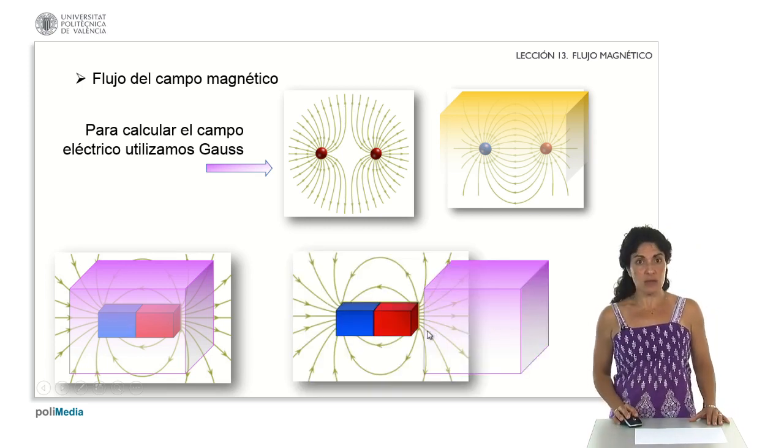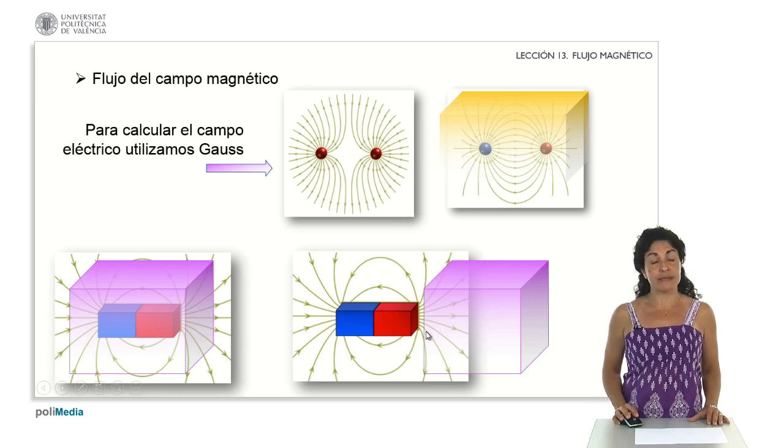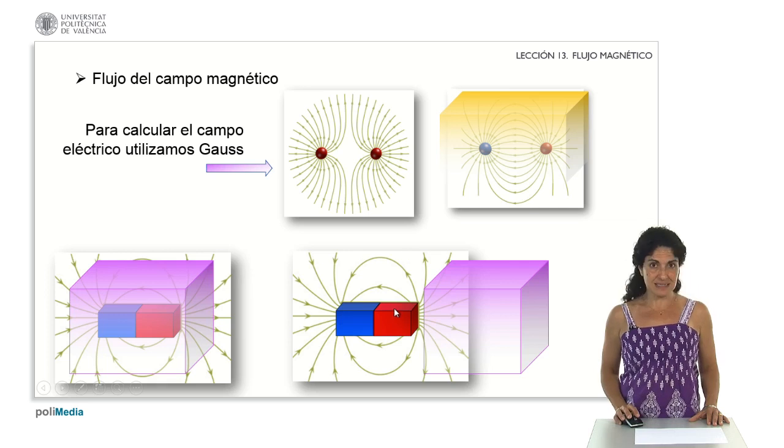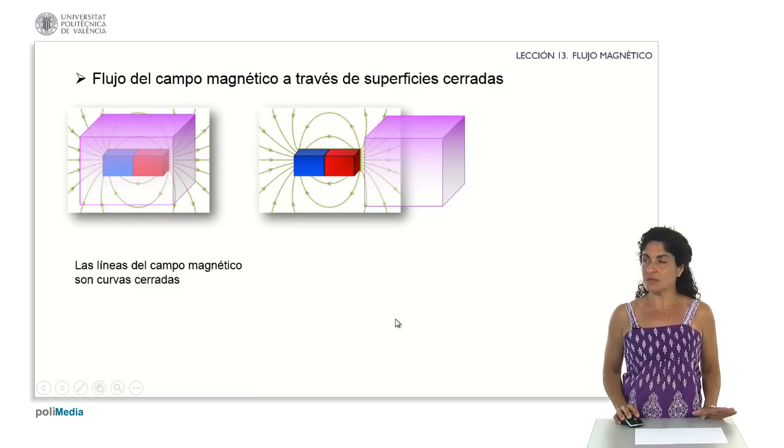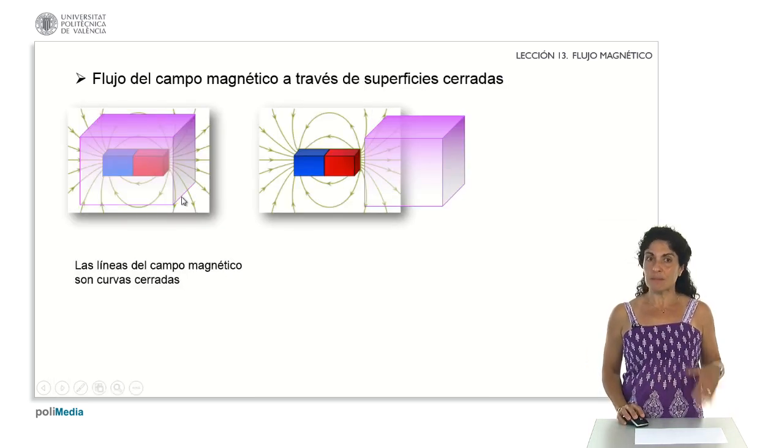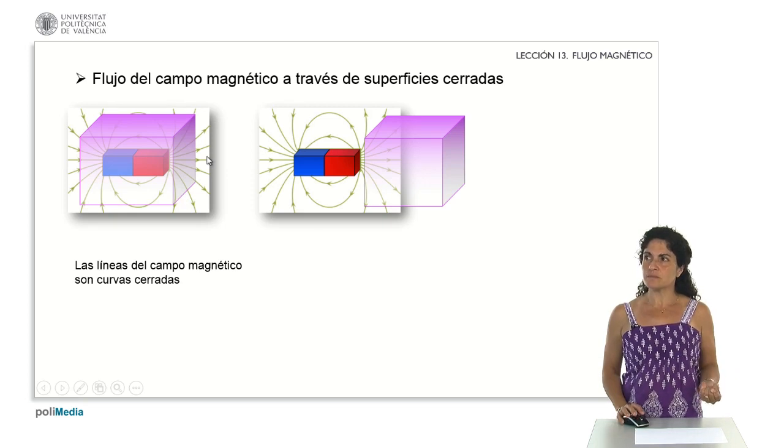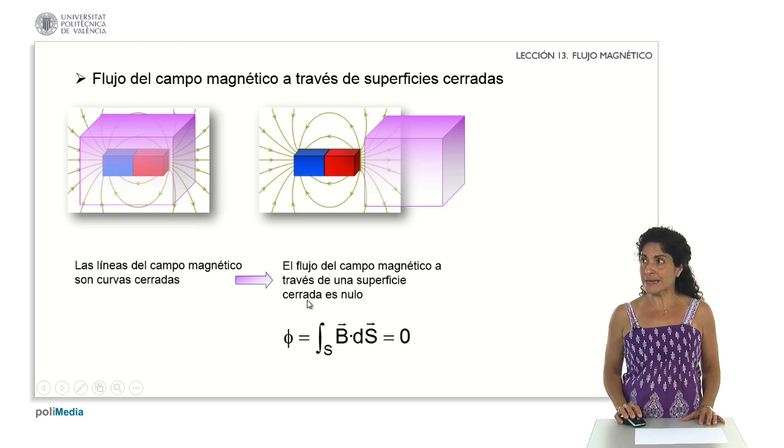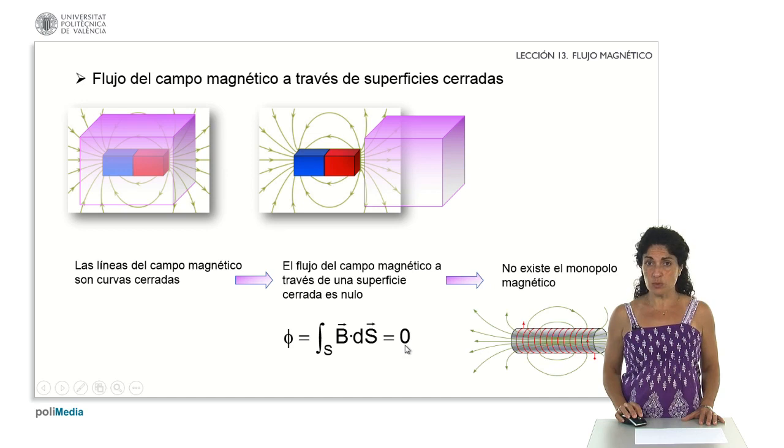The same thing happens if I put the enclosed surface next to the magnet. If I do not enclose it, also the same amount of field lines are going in as coming out. Therefore, in the case of magnets, I have to take into account that in order to generate magnetic field, that because the magnetic field lines are closed, the net flux of a magnetic field through a closed surface is going to be zero.